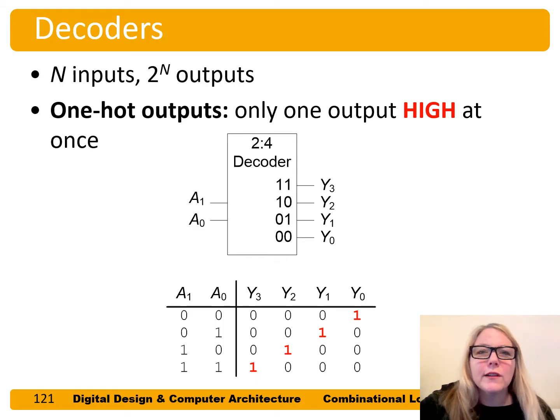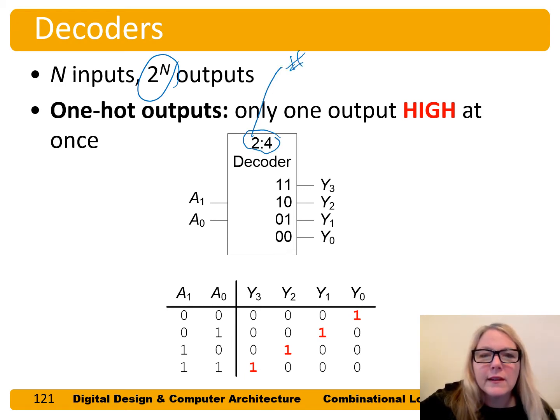Decoders are very useful digital building blocks that we're going to use in many circuits. A decoder takes n inputs and produces 2 to the n outputs. We specify the size of our decoder as the number of inputs and the number of outputs. So this is called a 2 to 4 decoder, this symbol here, because it has 2 inputs and 4 outputs.